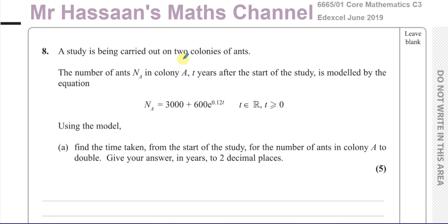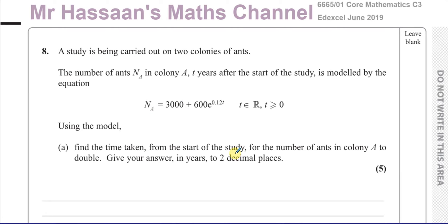It says a study is being carried out on two colonies of ants. The number of ants Na in colony A, t years after the start of the study, is modelled by the equation Na equals 3000 plus 600 times e to the power of 0.12t, where t is a real number, t is greater than or equal to 0, and t is in years. Using the model, find the time taken from the start of the study for the number of ants in colony A to double. Give your answer in years to two decimal places.